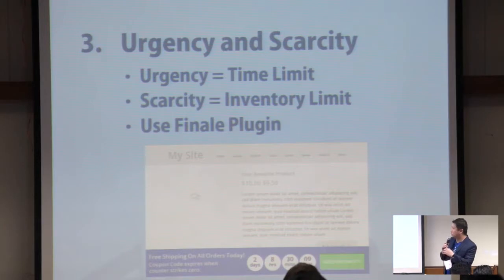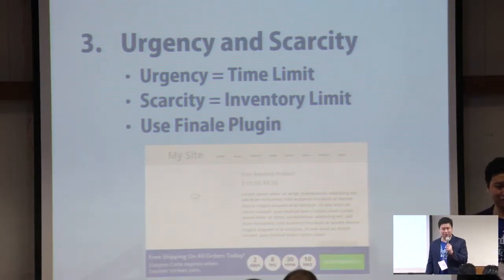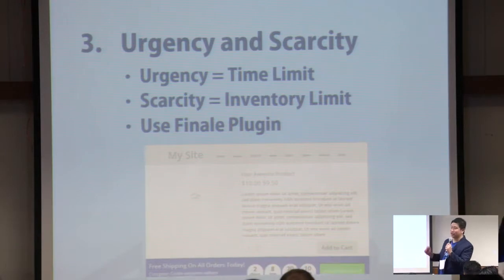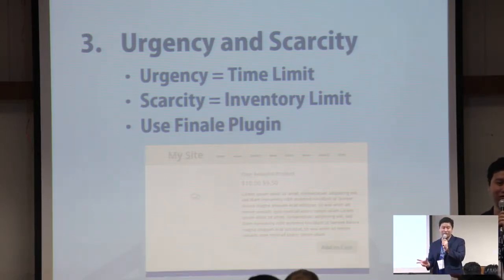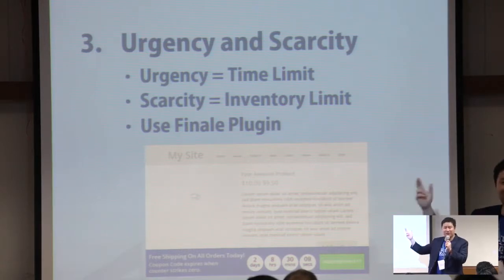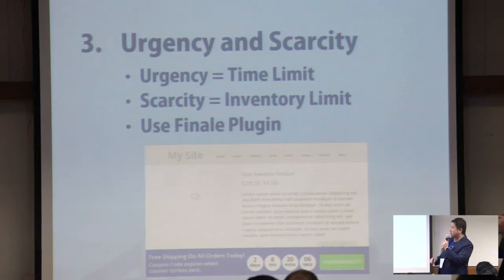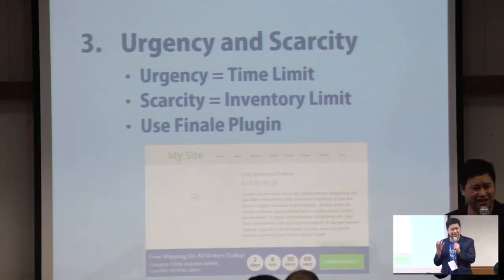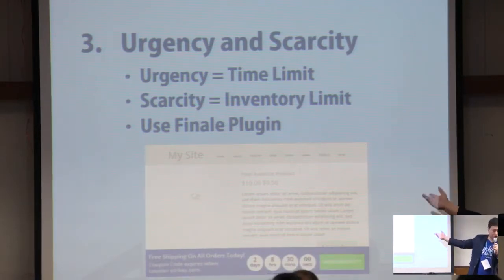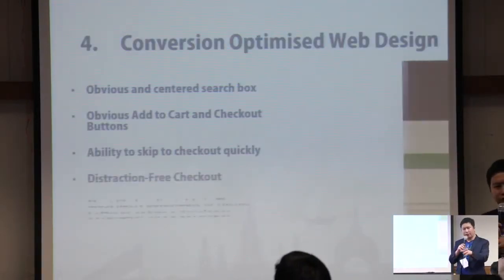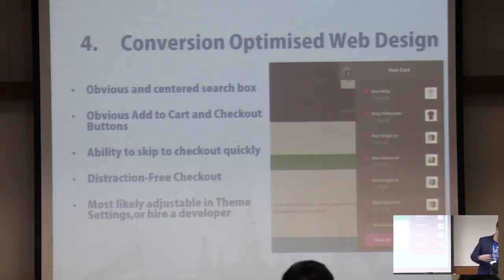Urgency means a time limit — for example, 'This sale ends at midnight tonight, buy now or the price goes up.' Scarcity means limited stock — 'Only 50 units, once sold out it's gone or the price goes up.' I create urgency and scarcity using a plugin called Finale, which you can search for in the WordPress plugin repository. It's free, though they do have a paid version.